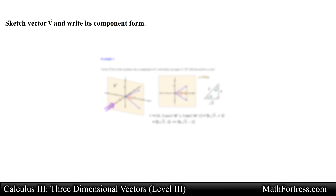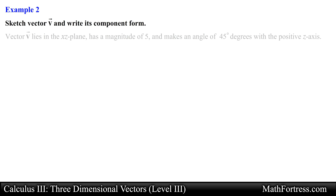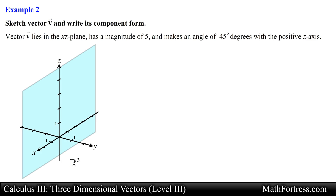Let's try another similar problem. Vector v lies in the xz plane, has a magnitude of 5, and makes an angle of 45 degrees with the positive z axis. Similar to the previous example, let's make a sketch. Notice that we can also form two separate vectors that make an angle of 45 degrees with the z axis, so this problem will also have two solutions.